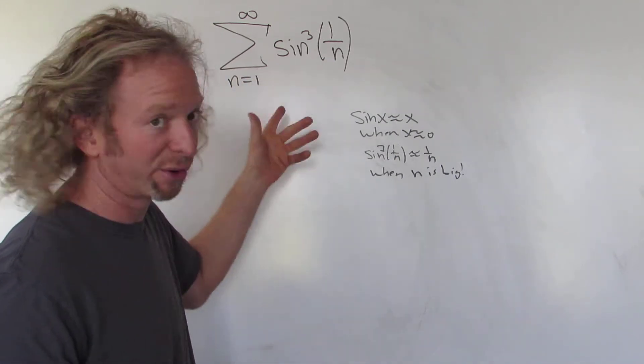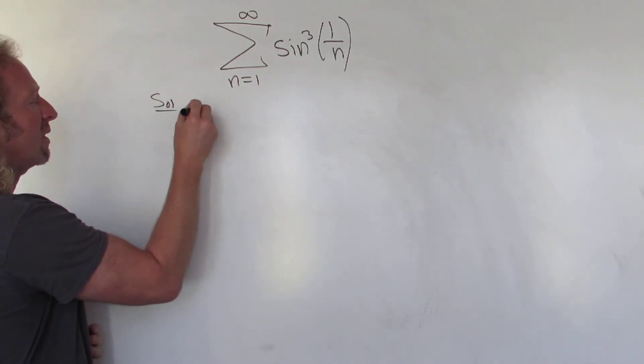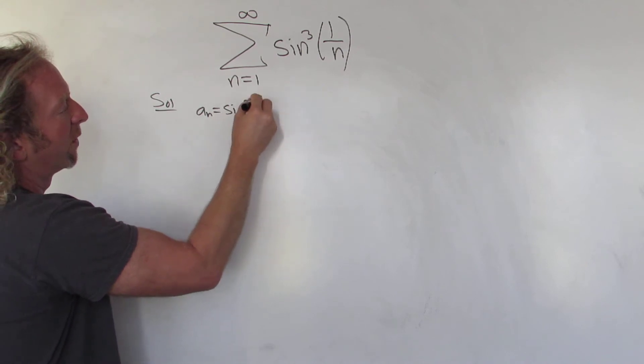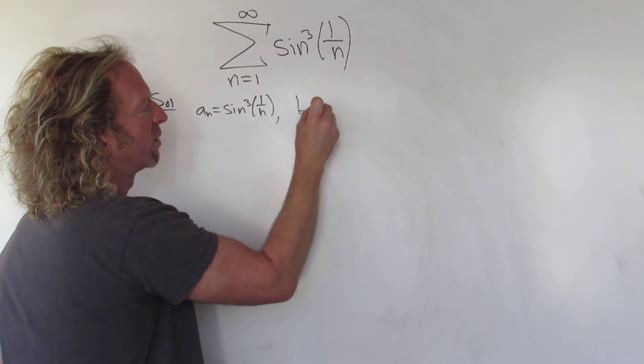Okay, so let's use limit comparison with 1 over n. So to use limit comparison, you write down your a sub n. So in this case, this will be our a sub n: sine cubed of 1 over n. Then you write down your b sub n. So b sub n in this case is just 1 over n.